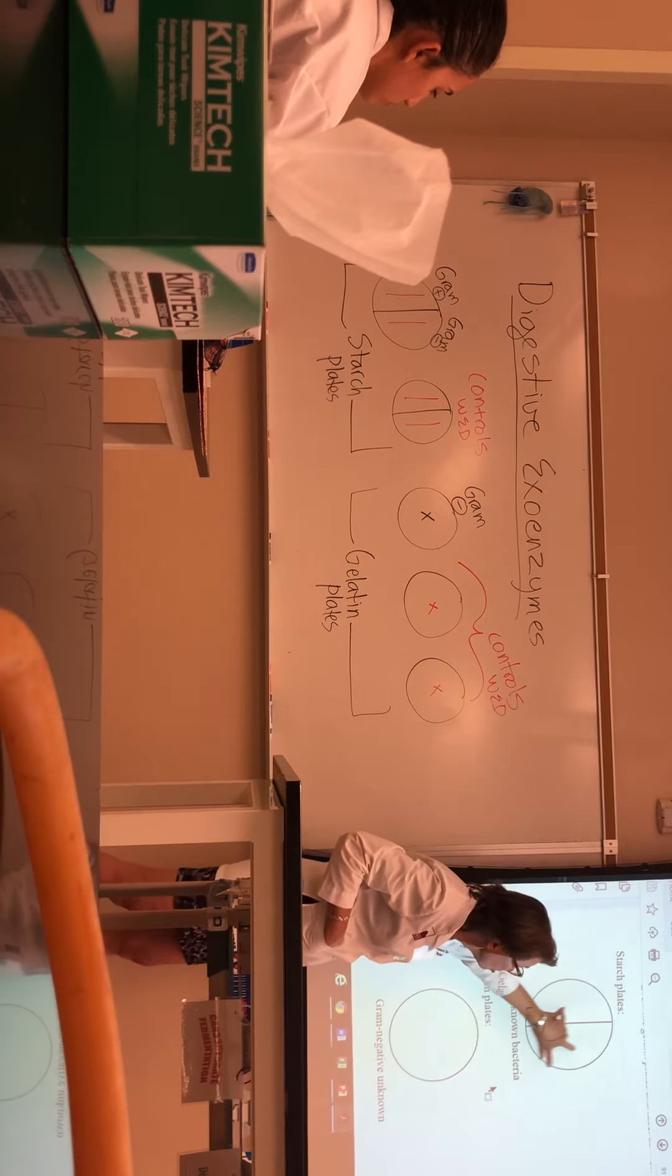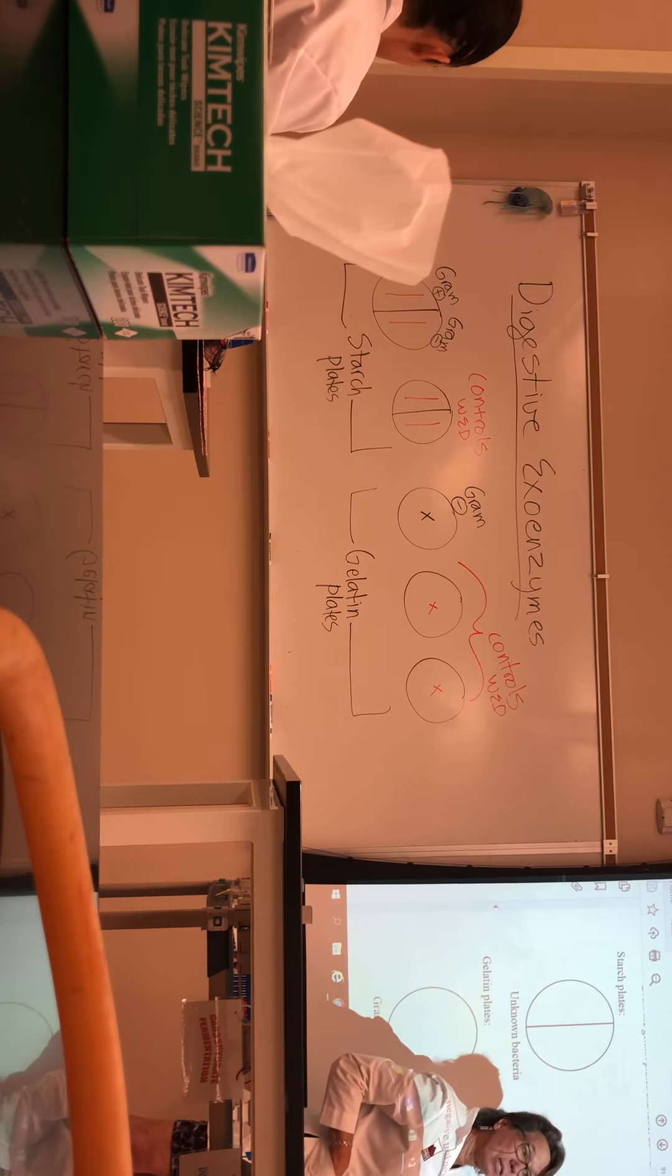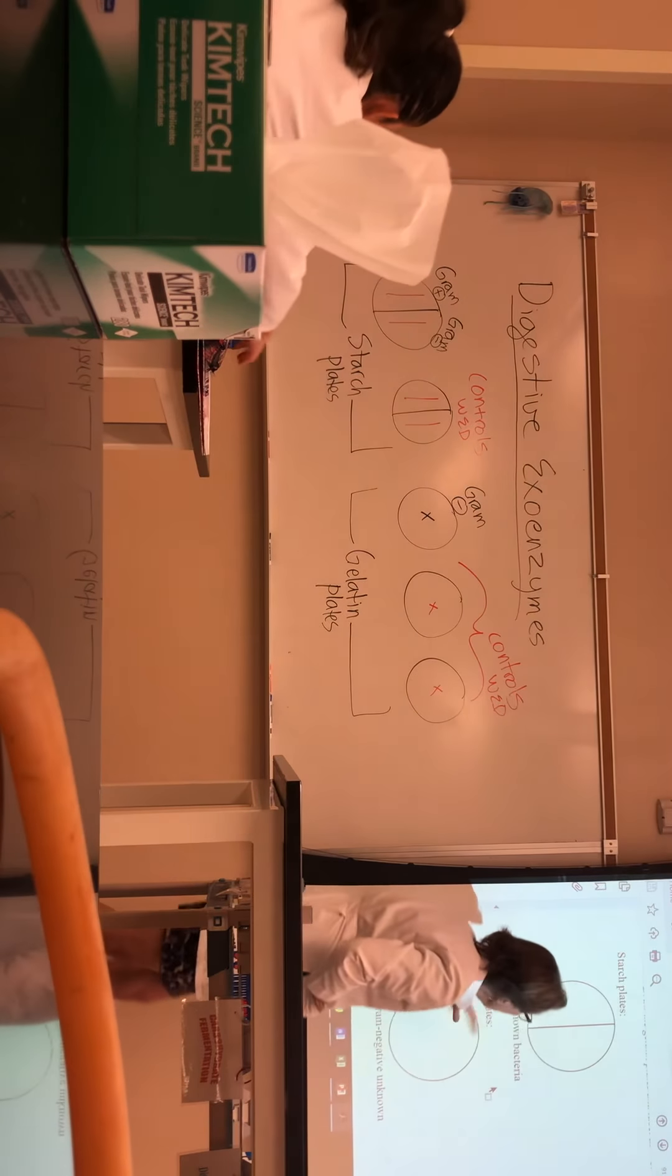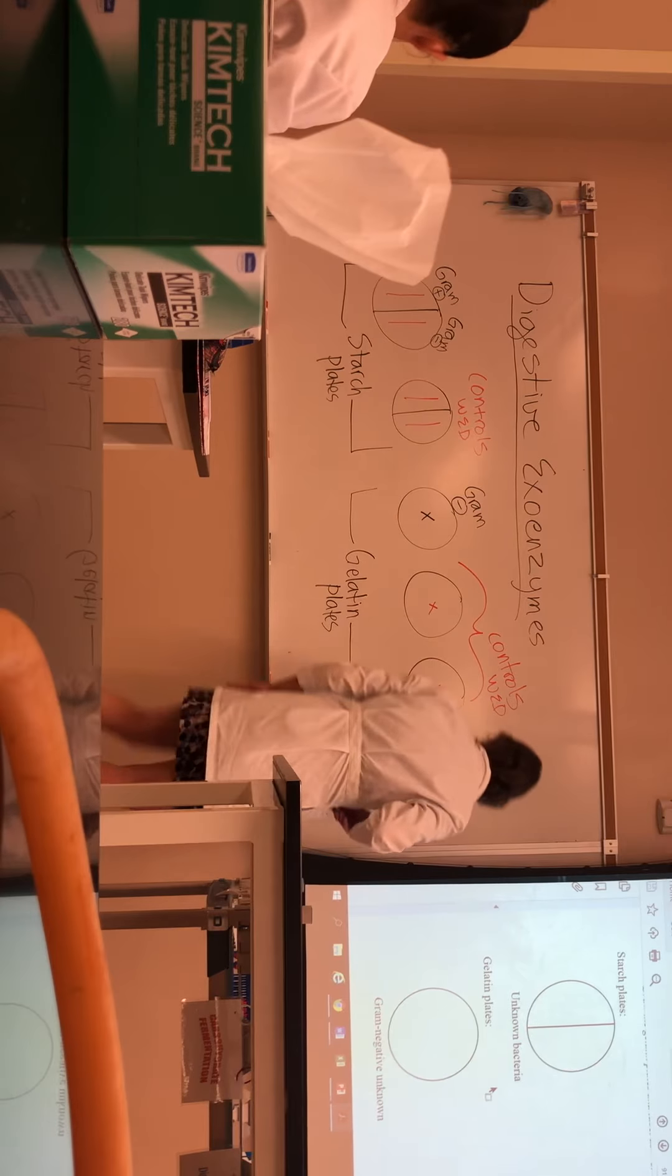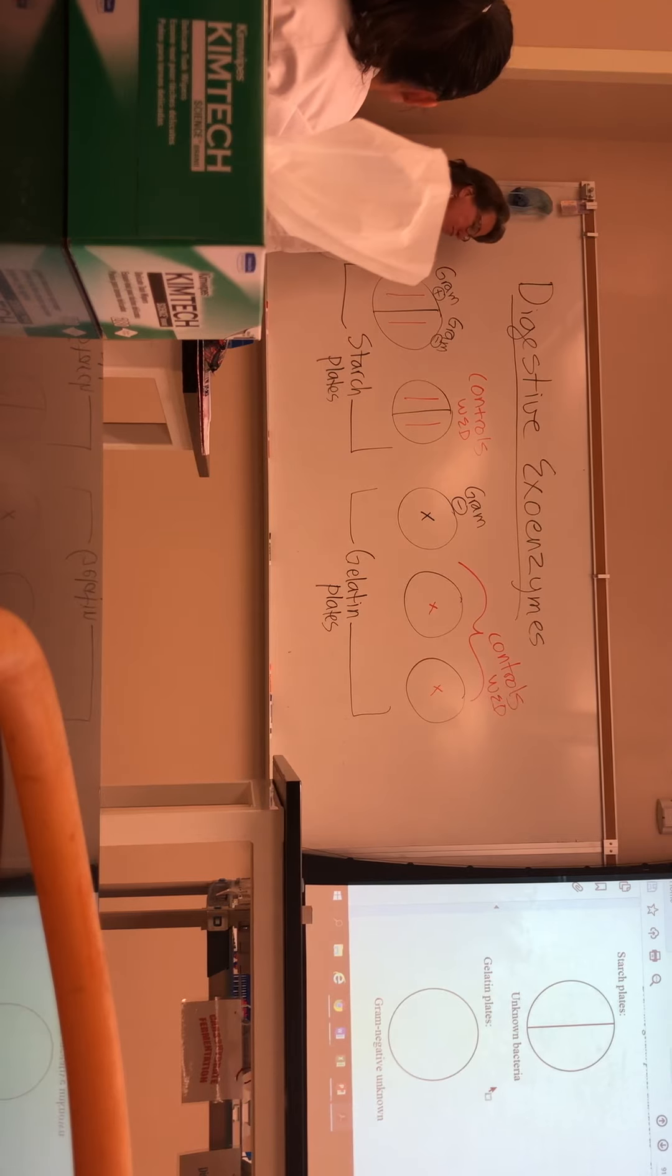And you, again, want to do it in a straight line. We're going to compare that to E. coli and Bacillus subtilis. Those are the controls. Anita will set those up. So the question then comes for the starch plate. And again, you're going to put straight line, gram positive, gram negative.